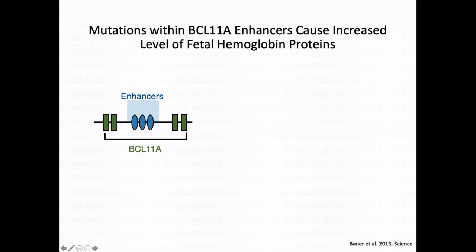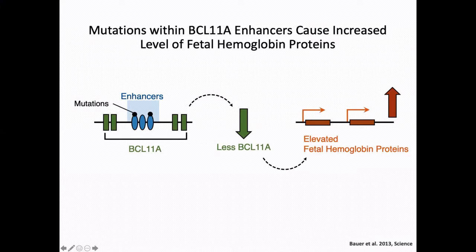A perfect example to describe this idea is the enhancer located within the famous gene BCL11A. In 2017, people from Stuart Orkin's lab identified a few mutations within those regions — actually within the intron of the gene. They found those mutations are highly correlated with blood diseases such as beta-thalassemia. In those patients, an increased level of fetal hemoglobin is usually seen. However, those mutations don't directly regulate the hemoglobin genes. Instead, they actually regulate BCL11A, which turns out to be the suppressor of those hemoglobin genes.